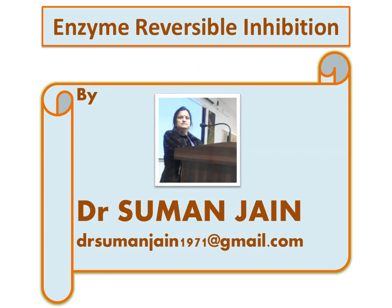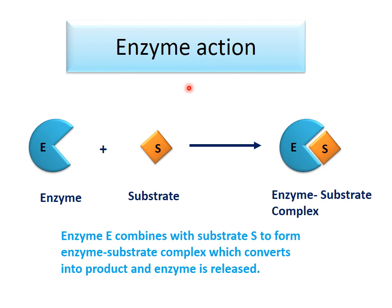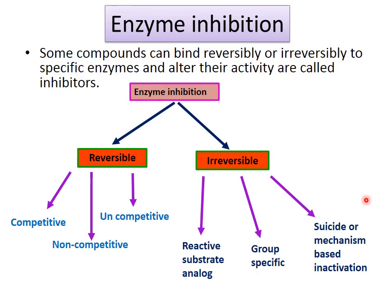Today we start with reversible inhibition. In enzyme action, we have seen that enzyme E combines with substrate S, and a temporary enzyme-substrate complex is formed, which is then converted into product. The enzyme is released as it is and starts other reactions.